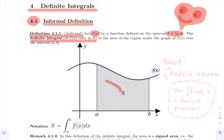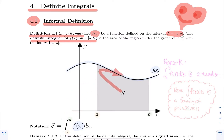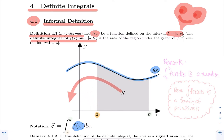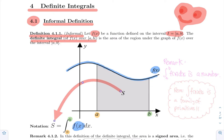The notation for the definite integral goes as follows. We use the integral symbol, and the function f of x goes inside this integral symbol. The surface that we are interested in starts at a, which we call the lower bound of integration, and it goes all the way up to b, which we call the upper bound of the integral. So a is the lower bound, b is the upper bound, and we're looking for that surface under f over the interval ab. That's the definite integral.